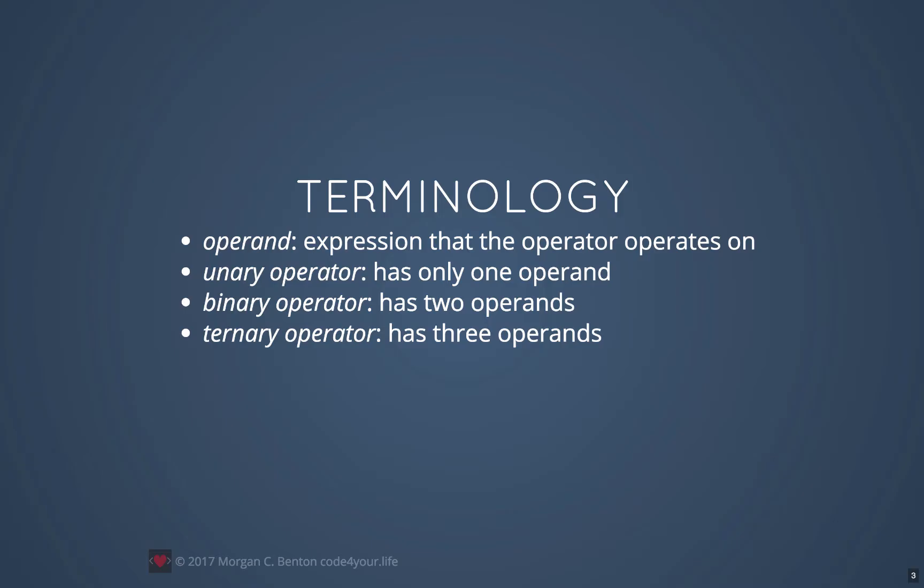A unary operator is an expression that has only one operand. A binary operator, which is the most common kind, is an operator that has two operands. And the ternary operator, which we're not going to show in this video, has three operands.